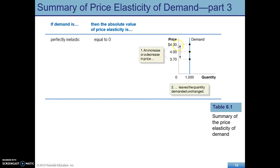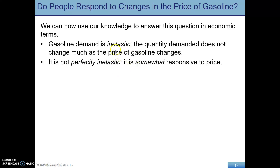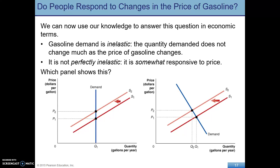So let's apply our economic insight to that discussion at the beginning about the price of gasoline. Using what we've just learned, we would say that gasoline demand is inelastic — quantity demanded does not change much as the price of gasoline changes, but it does change some. So it's not perfectly inelastic; it is responsive somewhat to a change in price. The curve that illustrates this is pretty steep but not vertical — a small change in price leads to a smaller percentage change in quantity demanded.